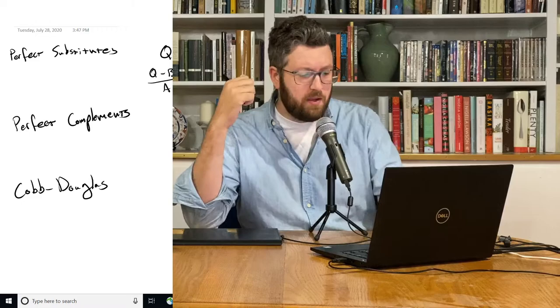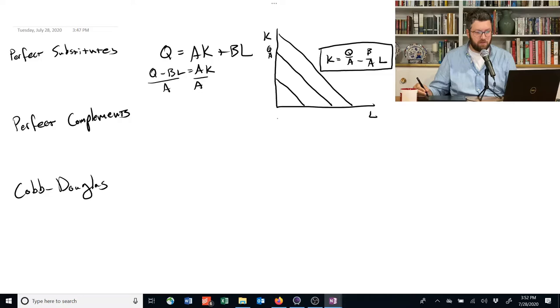Let's look at the kind of polar opposite case, which is perfect complements. Perfect complements have a weird function, so I'm going to start instead with drawing it. So if this is a straight line, a perfect complements isoquant is as kinked as you can possibly get. It's a straight right angle.